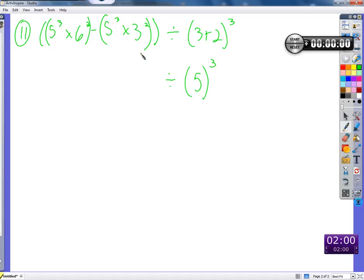Do the exponents. Do the exponents. Okay, so in the parentheses we're going to have 5 to the third. That's 125. Times 6 squared. That's going to be 36. Minus, again, 125. Times 9.